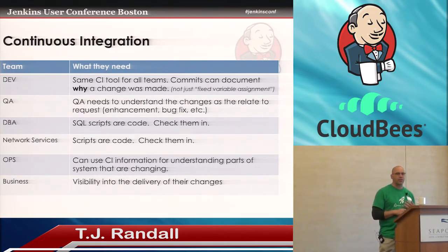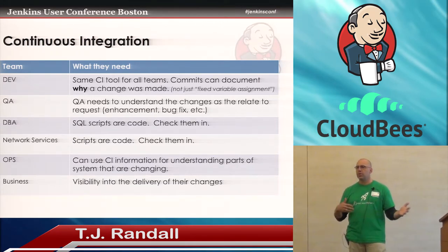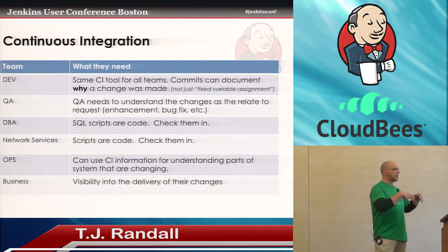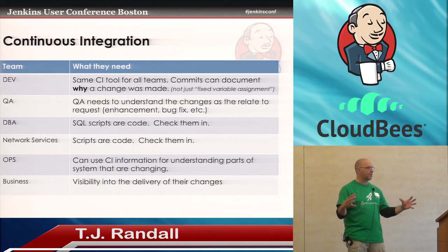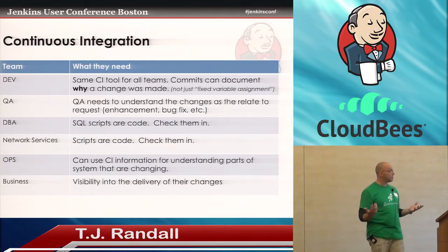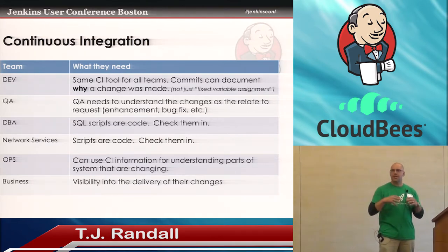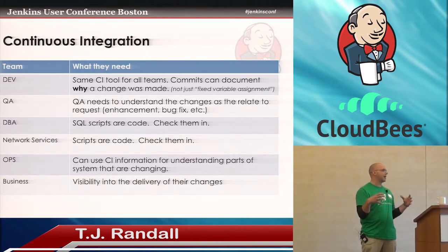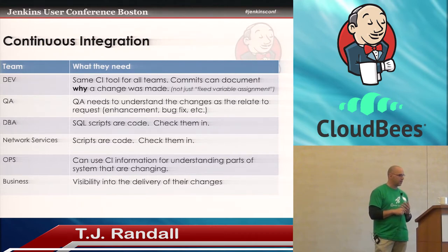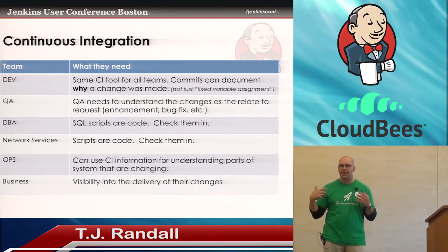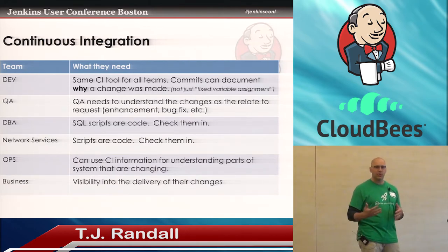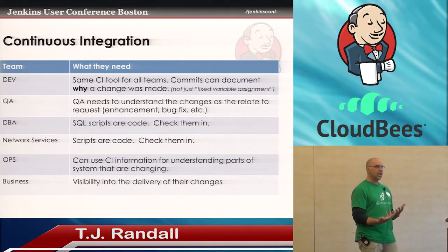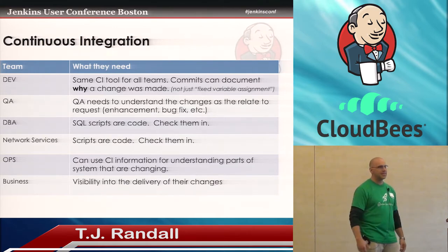For continuous integration, it's very hard to answer: what changed, why did it change, and how did it change? Each of those groups need to know that information in some way. If you're thinking about your toolkit, for dev you want to try to use the same CI tooling for all applications. A common problem is going to an organization where they use a CI tool for one set of builds and maybe some of it's manual for a legacy app. Even dev has this hodgepodge of scripts, builds, and tools. How come commits don't document what actually happened? You read a commit like 'I reassigned a variable'—how does a business owner know what that means?